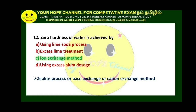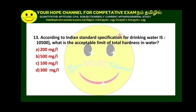According to Indian standard specification for drinking water IS-10500, the acceptable limit for total hardness in water is 200 mg/L and the permissible limit is 600 mg/L. For sulphate, the acceptable limit is 200 and permissible limit is 400.